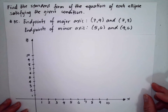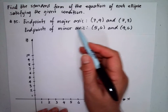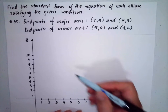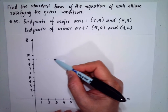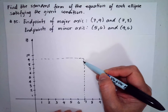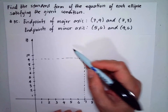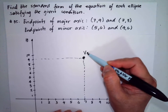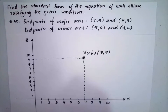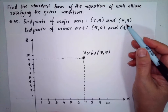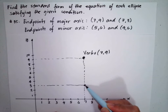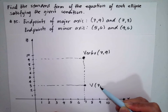If we draw this, the endpoints for the major axis are (7, 9) and (7, 3). The endpoints of the major axis are our vertices. So one vertex is (7, 9) and the other vertex is (7, 3).